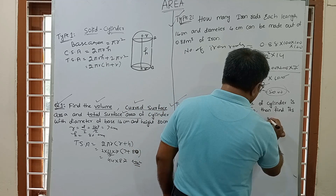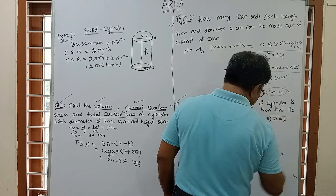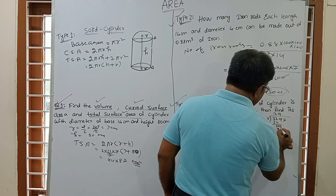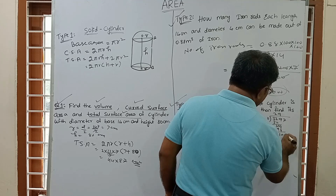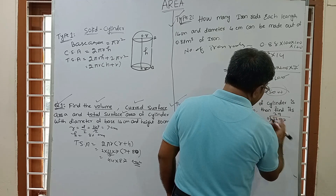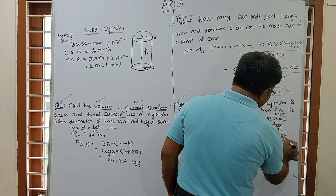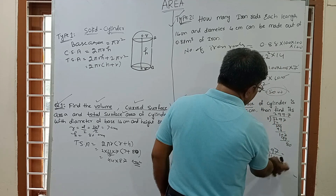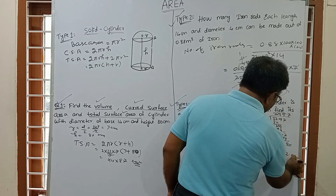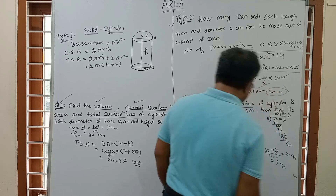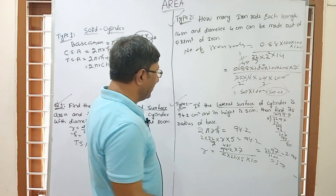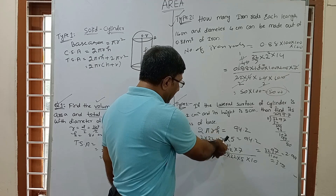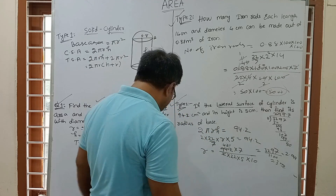R = (94.2 × 7) / (2 × 22 × 5). Remove the decimal: 942 × 7 / (2 × 22 × 5 × 10). After calculation: R = 3 cm. So the radius of the base is 3 cm. For this type of question, use lateral surface area = 2πRH, substitute the known values, and solve for R.